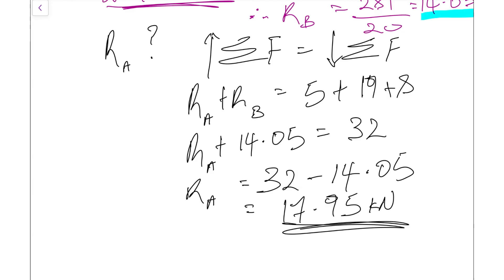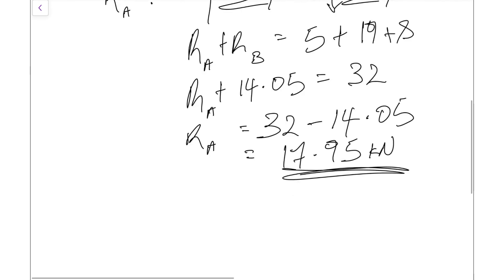To check your answer, one final thing you can do is simply add up the values you got for R_A, which was 17.95, with your 14.05. When you add these together, if they give you the same as the sum for your forces, then your system should be in equilibrium. It's a static system, and in this case it is. That's all added up to 32 kilonewtons, so we're good to go.